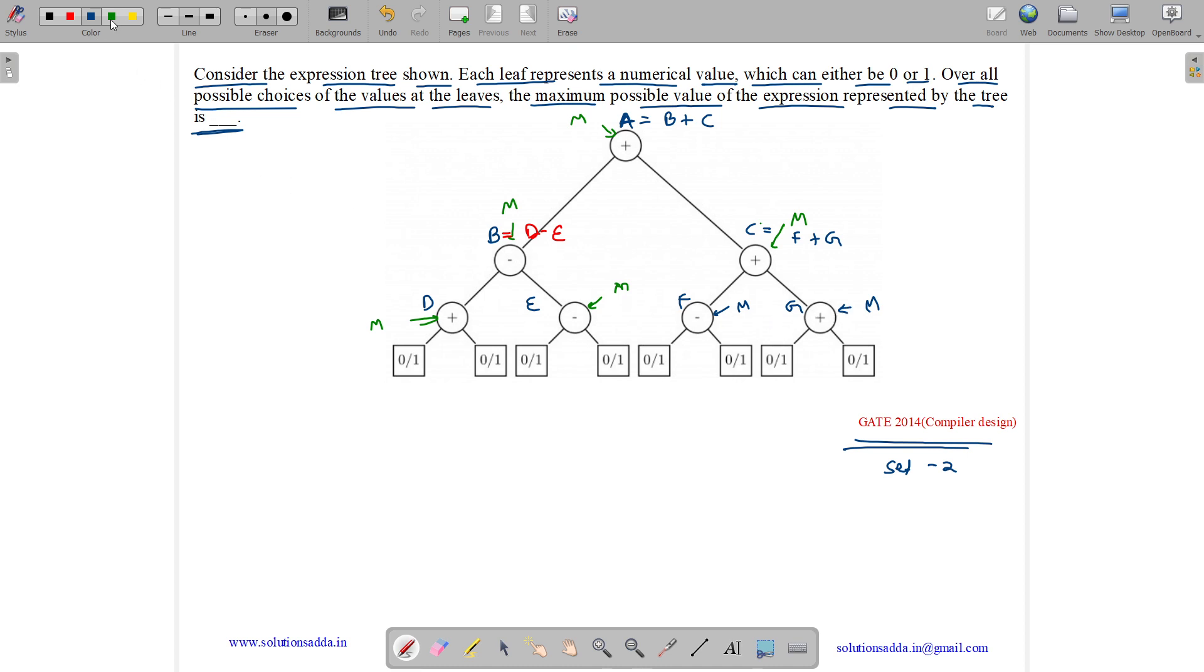Now let us find the values. What is D? D is sum of two values. The possible things for addition are 0 plus 0, 0 plus 1, 1 plus 0, and 1 plus 1. That's 0, 1, 1, and 2. Maximum value is 2. D will get a maximum value of 2 when we take 1 from here and 1 from here.